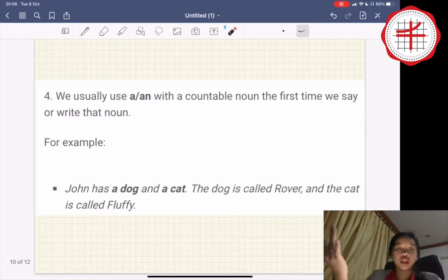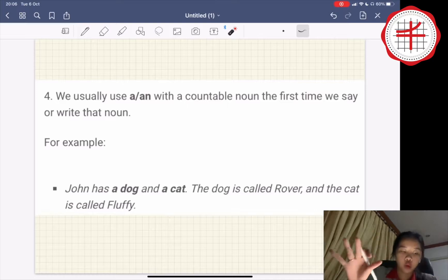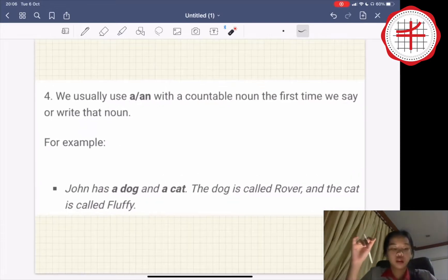Number four, we usually use a or an with a countable noun the first time we say or write that noun. For example, Dawn has a dog and a cat. The dog is called Lover and the cat is called Fluffy.